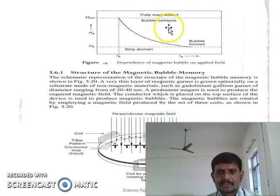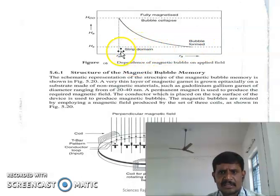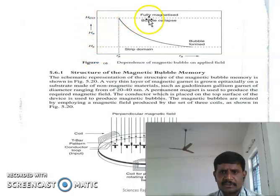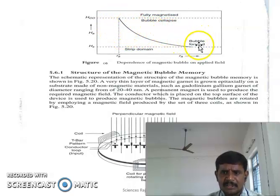In this graph, we are going to see the strip domain behavior. The field increases up to a maximum value. At the maximum value, the domains collapse and they form waveforms.